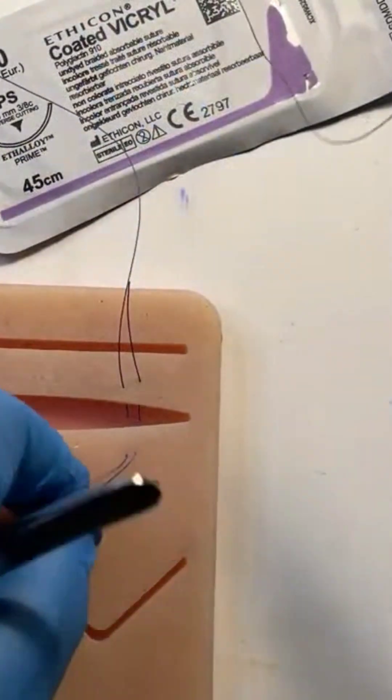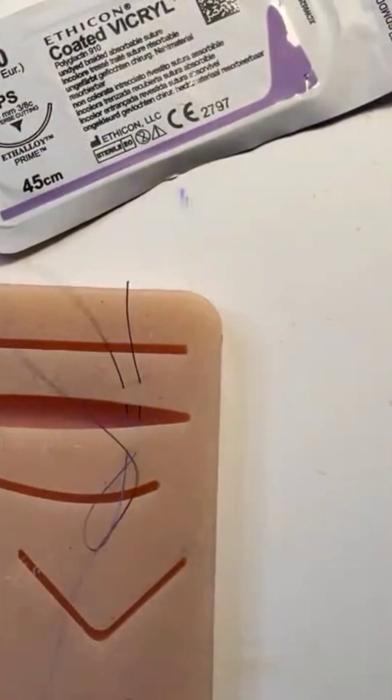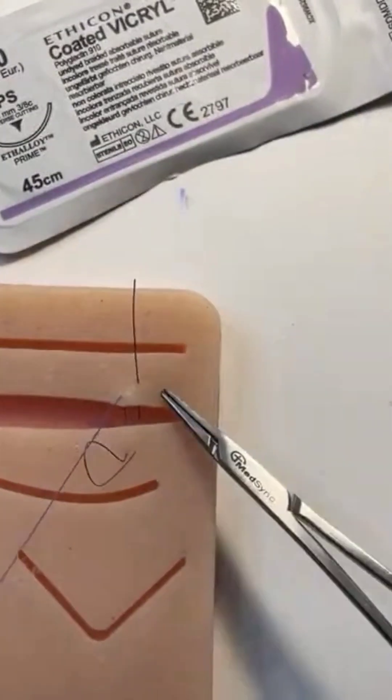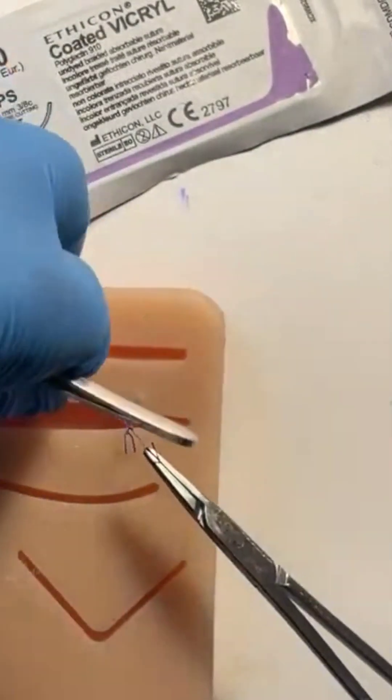Except for one thing. Check this out. You pass the needle through the loop and tie your knot. Why do this rather than a horizontal mattress?